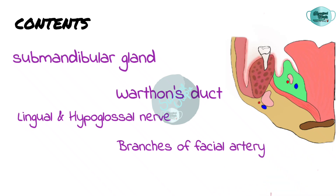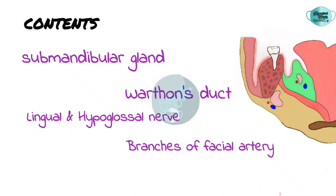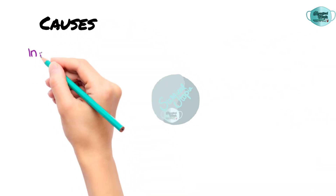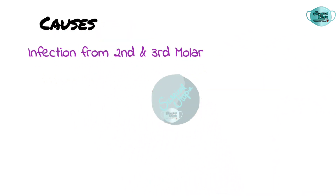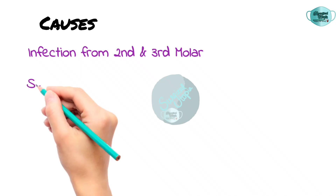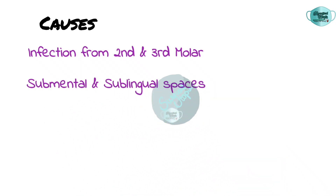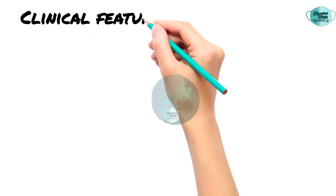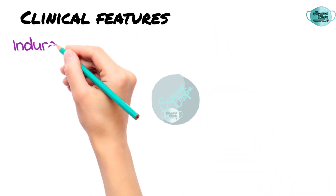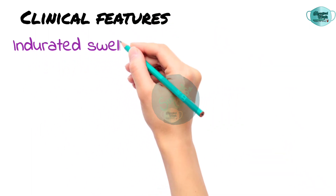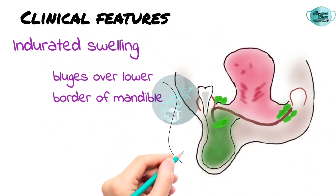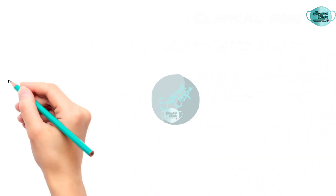The submandibular space gets involved due to spread of infection from the mandibular second and third molars, and spread of infection from the submental and sublingual spaces. Clinically, the submandibular space infection presents as an indurated swelling in the submandibular region, and the swelling usually bulges over the lower border of the mandible.